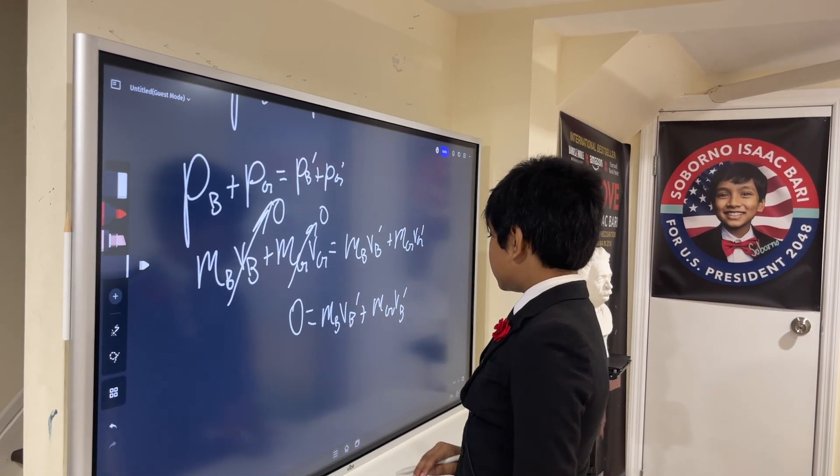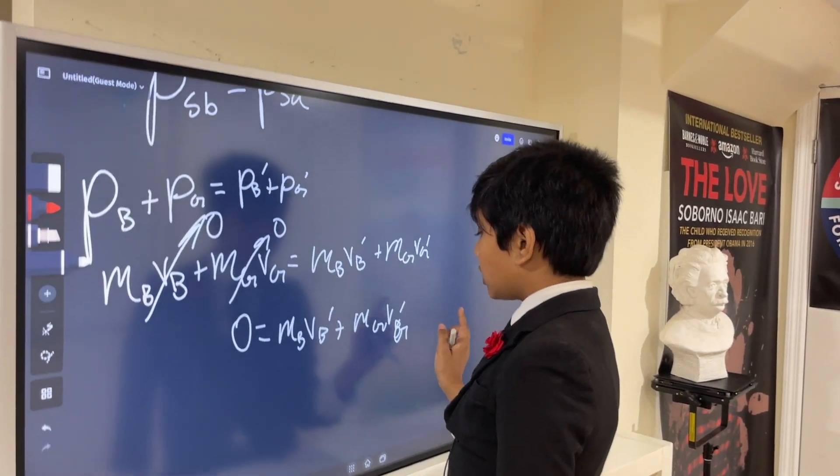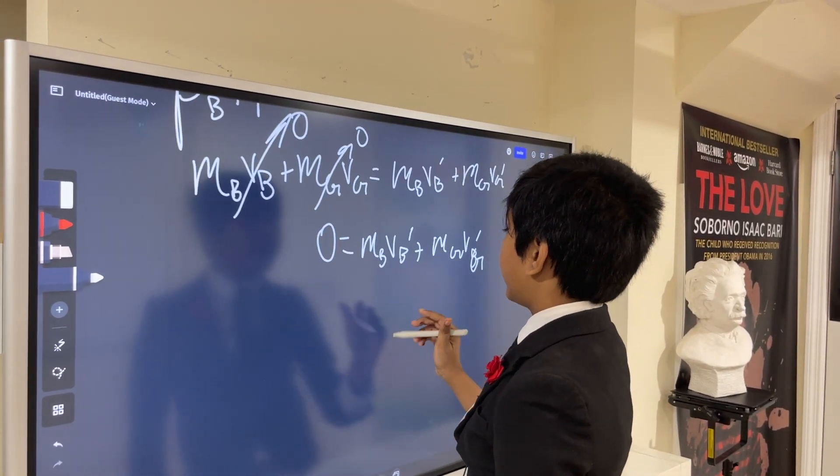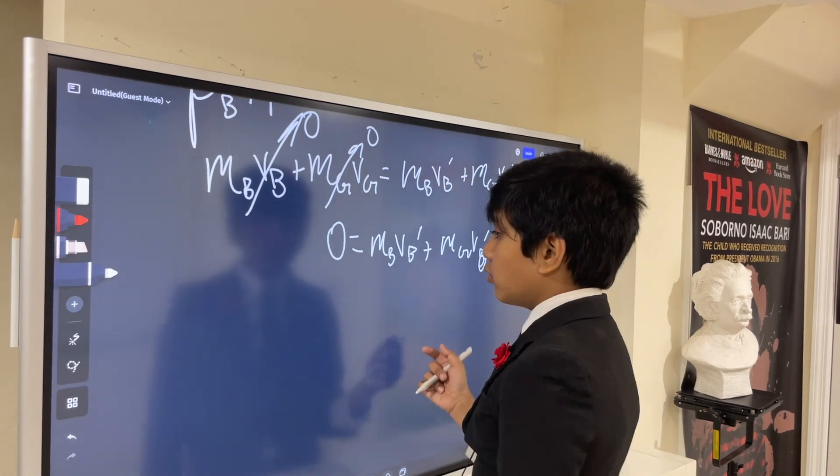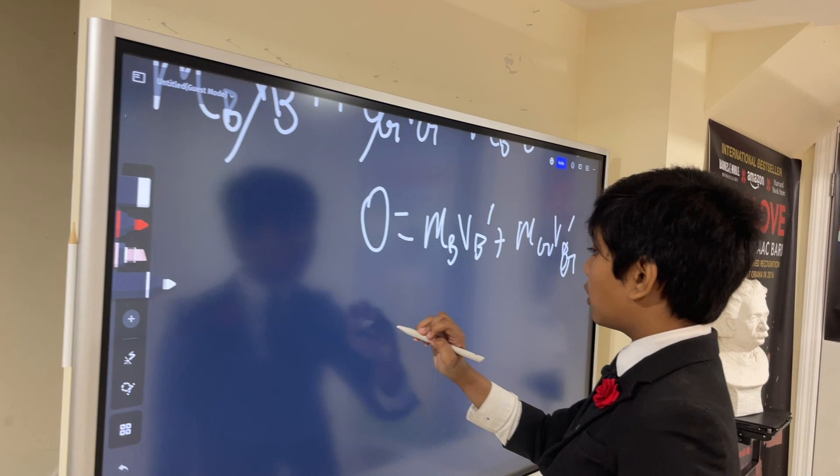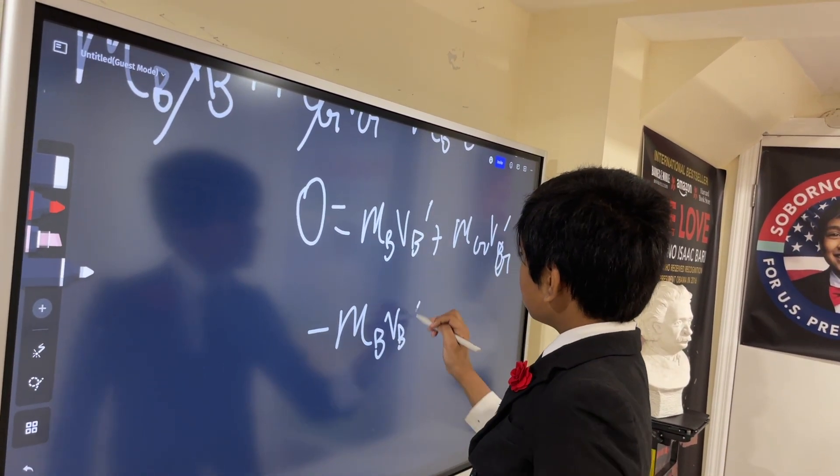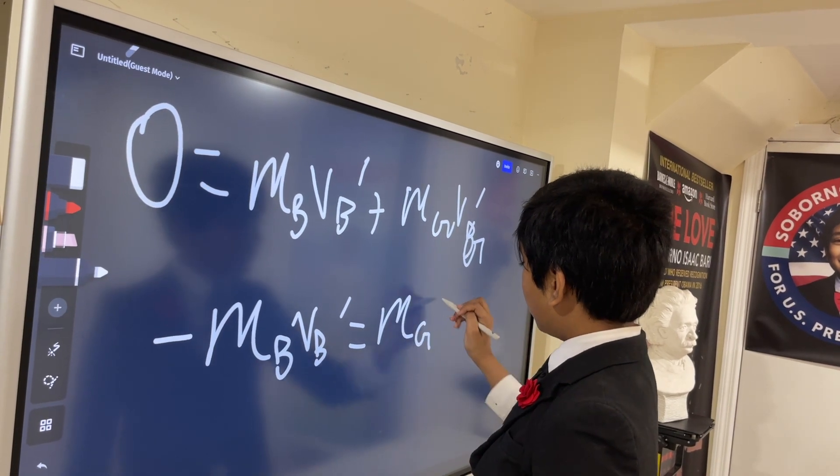The more experienced of you, this is not a B. The more experienced of you probably already see the solution in your heads. But, I'm going to work it out step by step. For those of you who aren't that familiar with algebra, we subtract MBVB prime from both sides giving us minus MBVB prime is equal to MGVG prime.